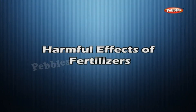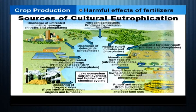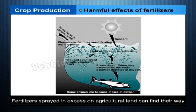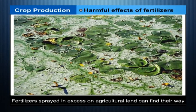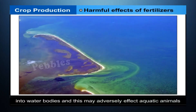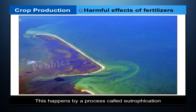Harmful Effects of Fertilizers: if inorganic chemical fertilizers are used in excess, fertilizers sprayed in excess on agricultural land can find their way into water bodies and adversely affect aquatic animals. This happens by a process called eutrophication.